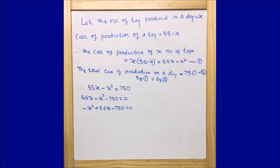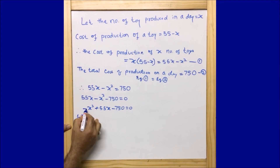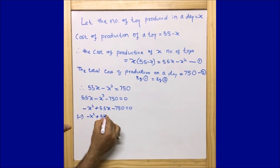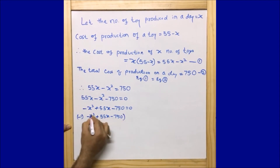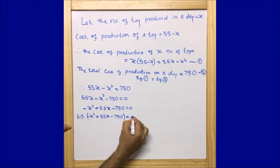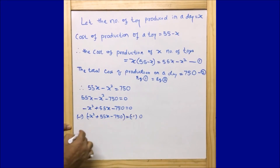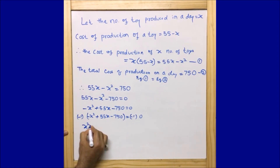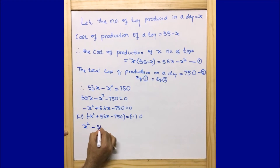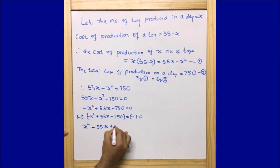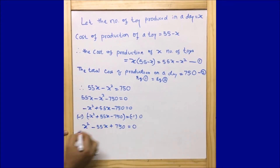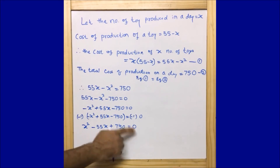Now I will multiply minus 1 on both sides of this equation to eliminate the negative x² term and make it positive x². Multiplying through: minus 1 into minus x² gives plus x²; minus 1 into plus 55x gives minus 55x; minus 1 into minus 750 gives plus 750; and minus 1 into 0 is 0. So the quadratic equation becomes: x² minus 55x plus 750 is equal to 0.